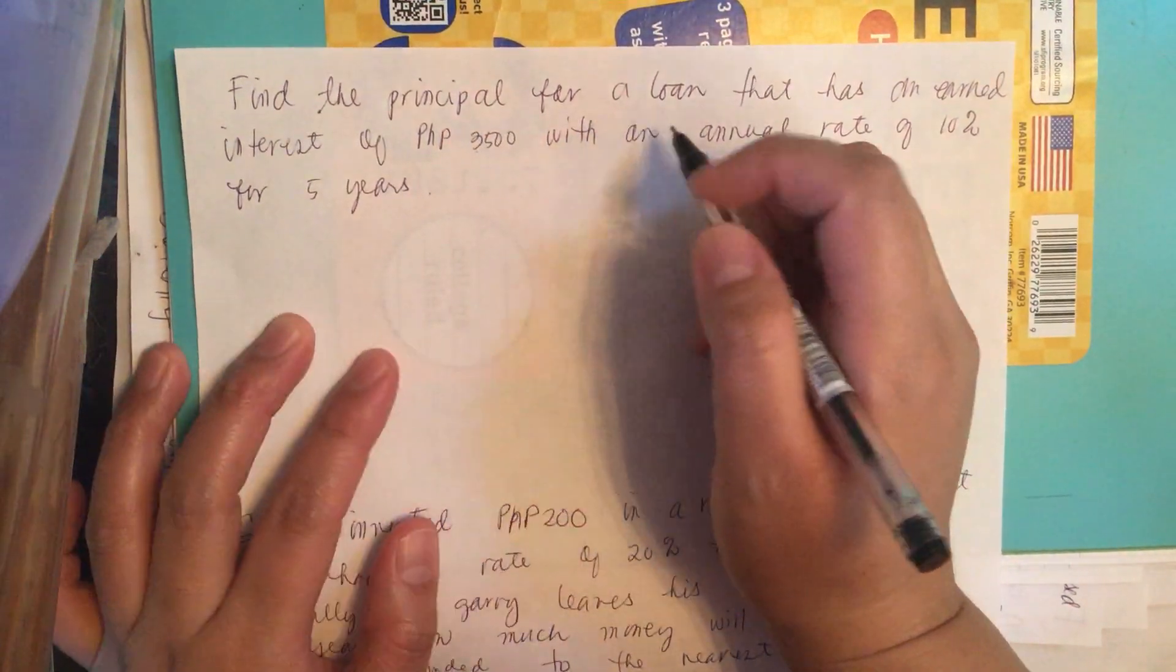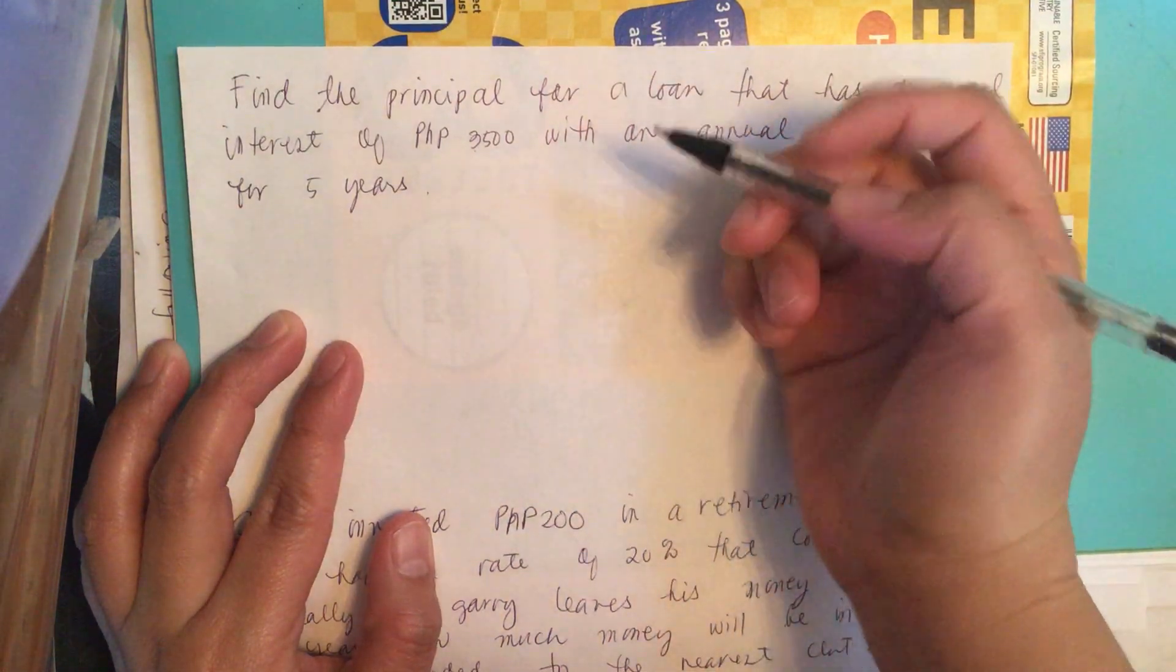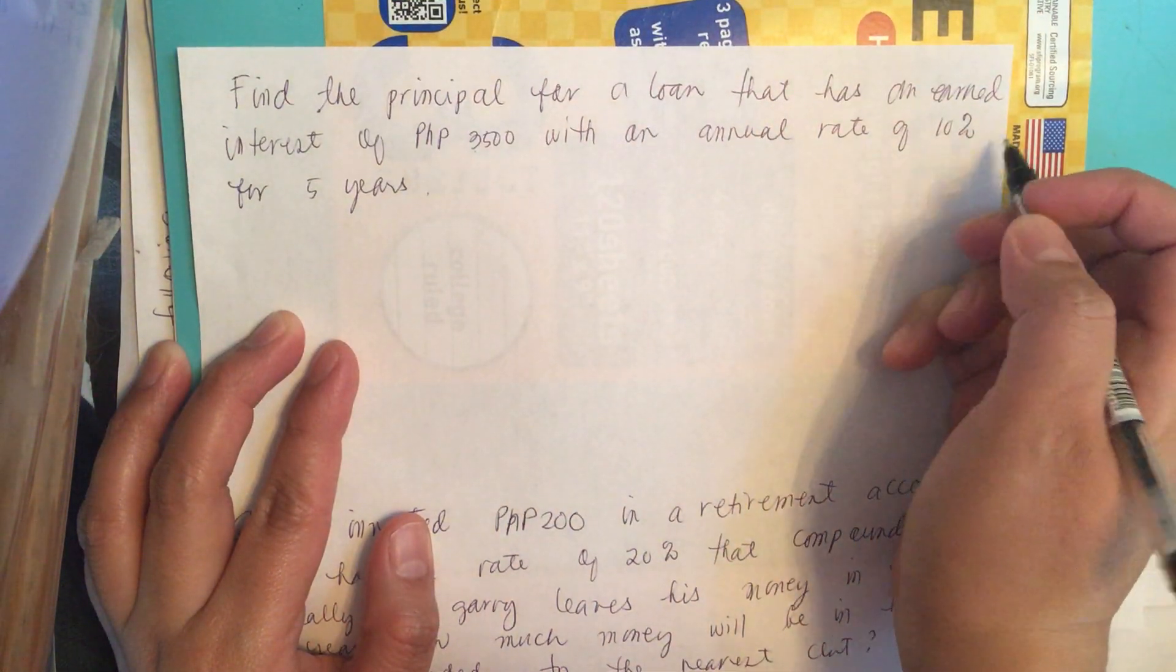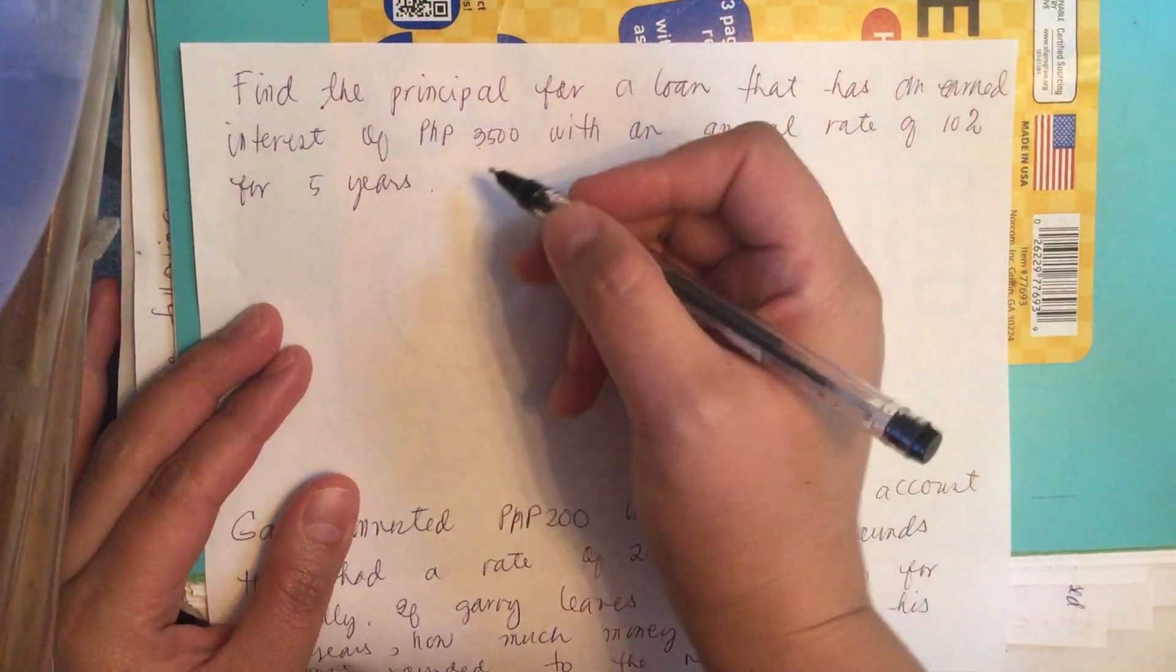Find a principal for a loan that has an earned interest of 3,500 pesos with an annual rate of 10% for 5 years.